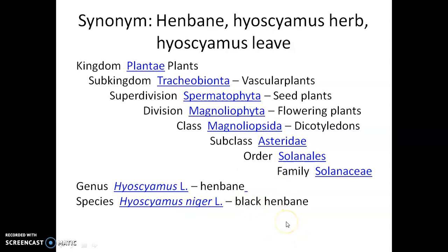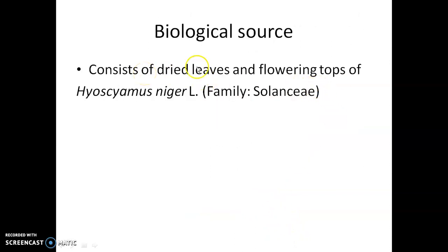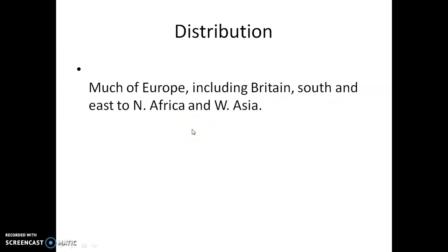The drug's biological source consists of the dried leaves and flowering tops of Hyoscyamus niger. It belongs to family Solanaceae. The distribution of this drug — it is basically indigenous to Europe, especially Britain, and it is also grown in South East and North Africa and West Asia, but that is introduced or cultivated. It is also found in India.